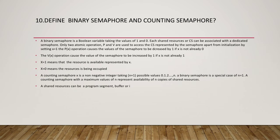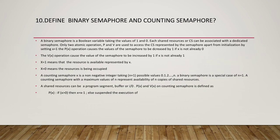P(X) and V(X) on a counting semaphore are defined as follows: P(X) — if X is greater than 0, then X equals X minus 1; else suspend the execution of the current process and put it in a waiting queue.